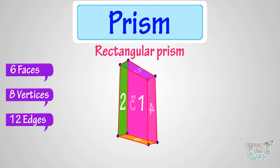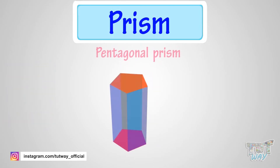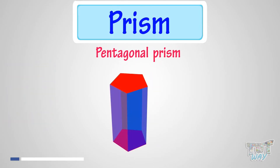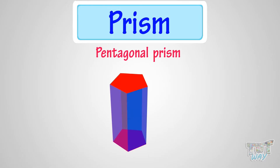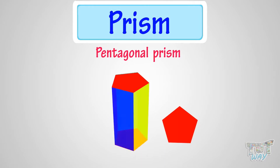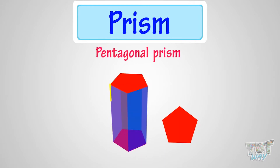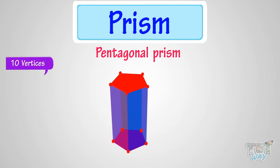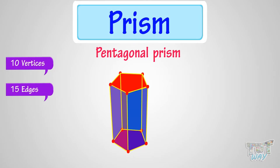This is a pentagonal prism, because its top and bottom faces are pentagon in shape, and all other faces are rectangular. It has 10 vertices, 15 edges, and 7 faces.